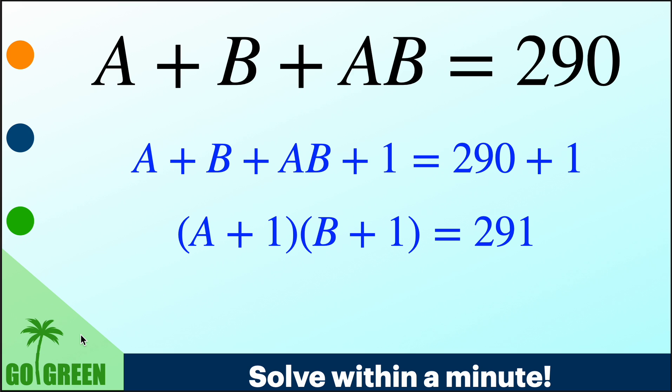Now, A is a natural number, B is a natural number. Therefore, A plus 1 is again a natural number, B plus 1 is again a natural number.